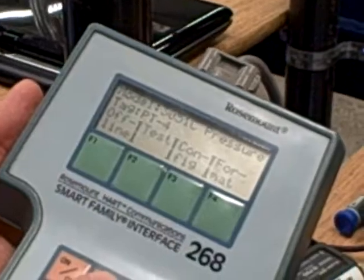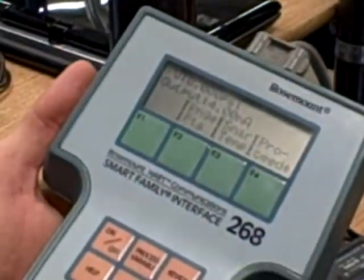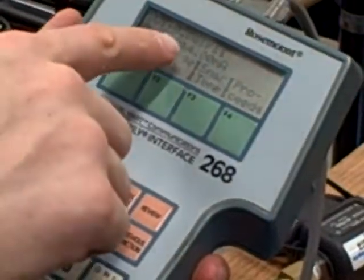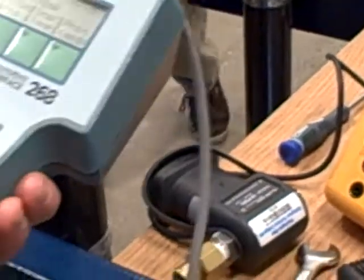I'm going to hit the process variable button right here. So now we're going to read what it thinks it's reading for pressure. And indeed right now it thinks it's reading 0 psi, which it's vented so it is reading 0 psi.